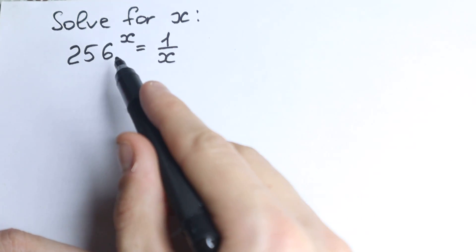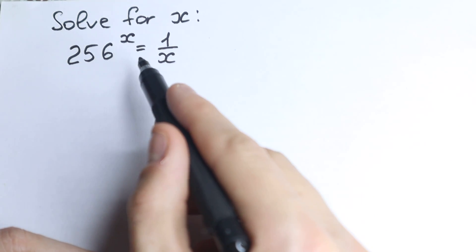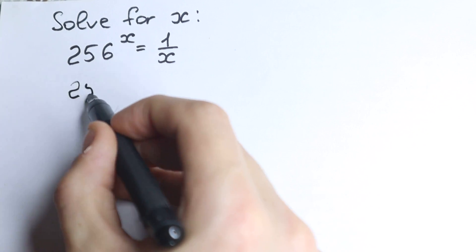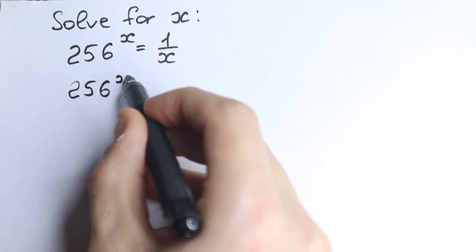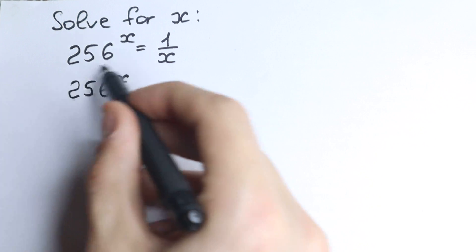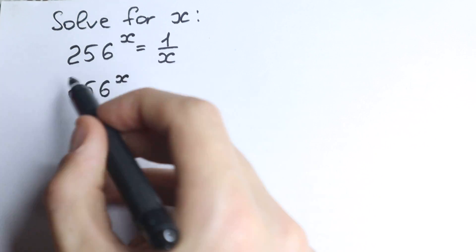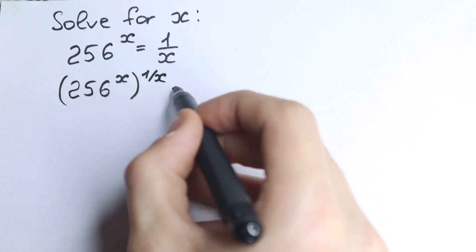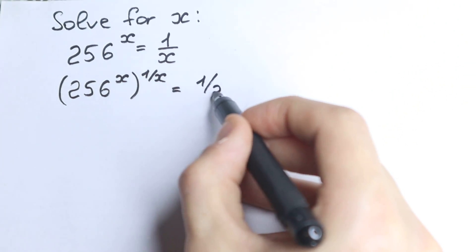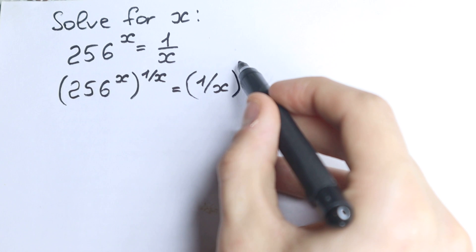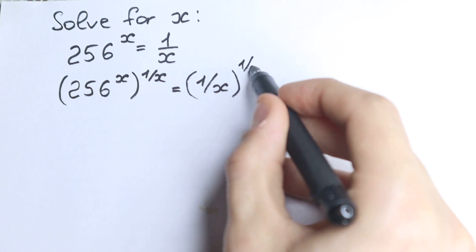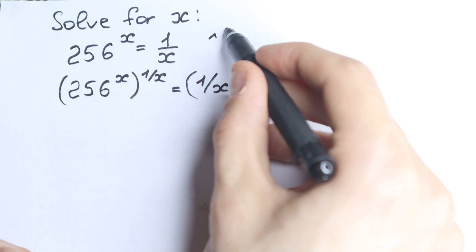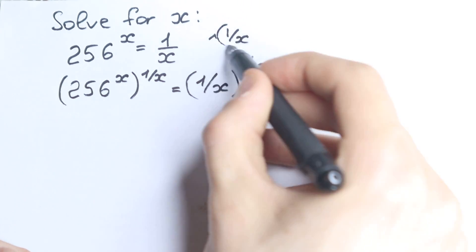So first of all, let's raise both sides to the power of 1 over x. This is our trick. So we have 256 to the power x, and we raise both sides by 1 over x, so we have that raised by 1 over x equal to 1 over x to the power 1 over x. We just raised both sides to the power 1 over x.